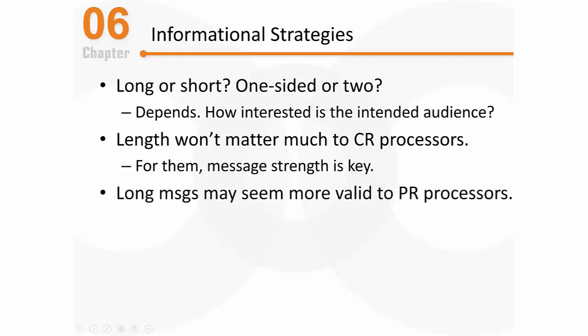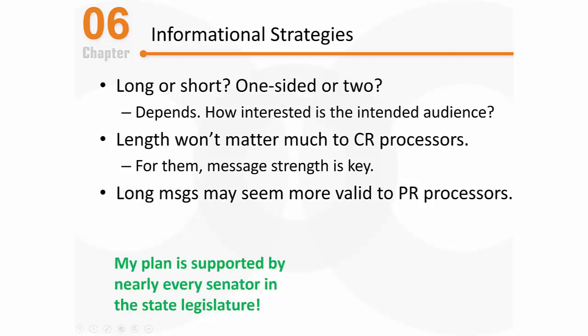Long messages may seem more valid to people processing via the peripheral route, because peripheral route processing pays attention to rules of thumb and superficial characteristics. These people might say, 'Wow, that person had such a long message — they really have a strong argument.' They're not necessarily paying attention to what is being said, just that the person said a lot. For example, a politician saying, 'My plan is supported by nearly every senator in the state legislature' — that message is short, sweet, powerful, and conveys a very important point.